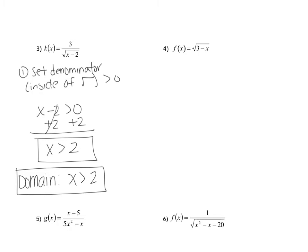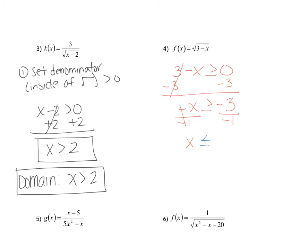Example number 4 is all about a radical. When you have a radical, you set the inside greater than or equal to 0, and simply solve for x. So we subtract 3 on both sides and get negative x is greater than or equal to negative 3. Divide by negative 1. Remember, when you divide by a negative, you have to flip the inequality sign. So the domain here is that x values need to be less than or equal to 3. If you didn't flip the sign, you probably got greater than or equal to 3.